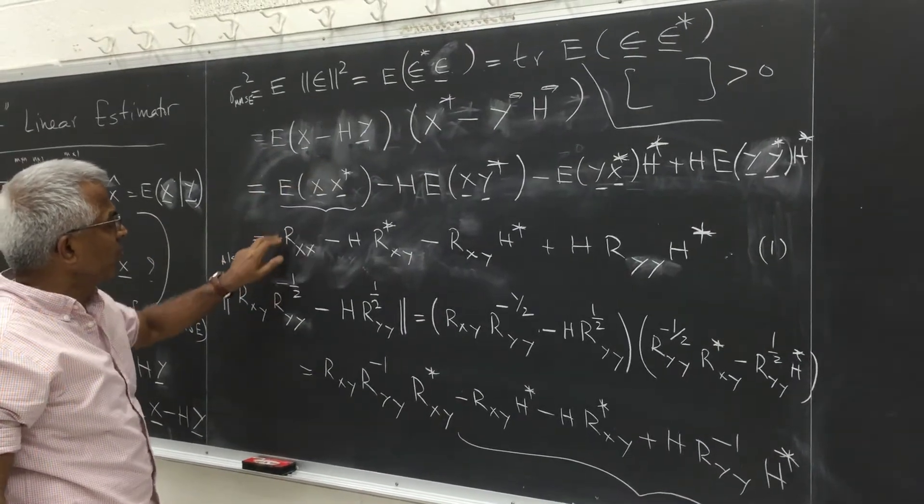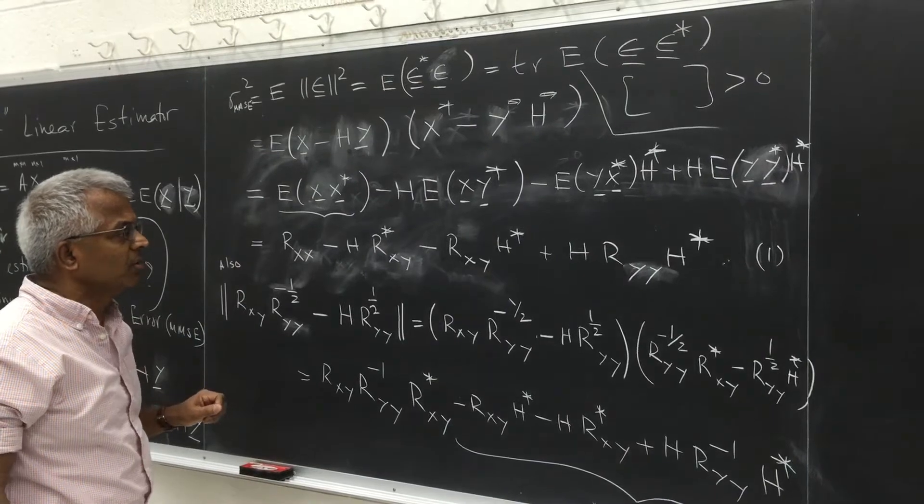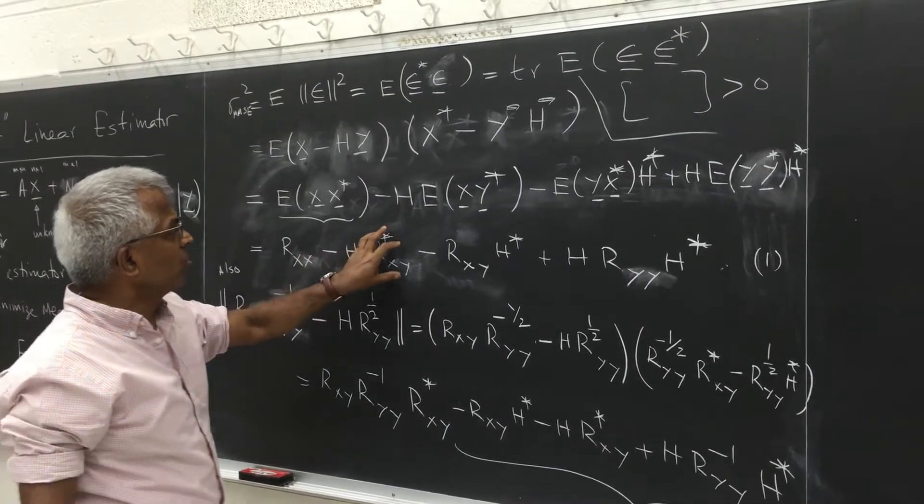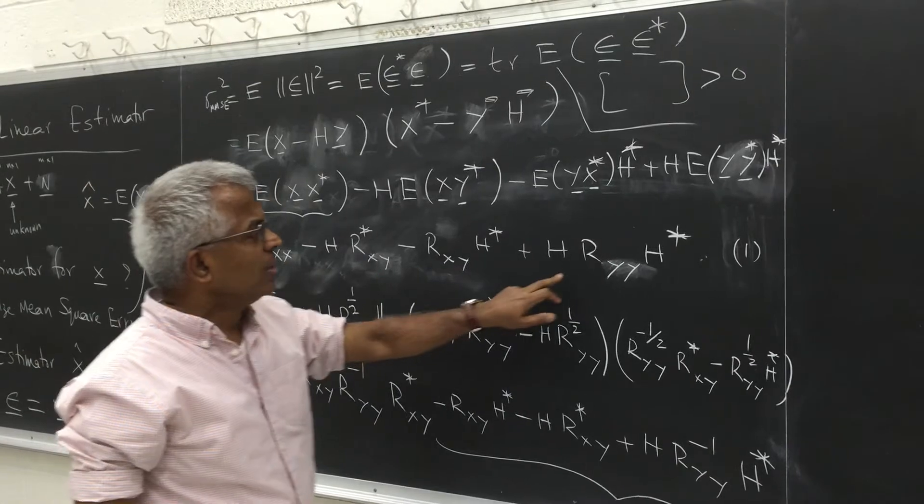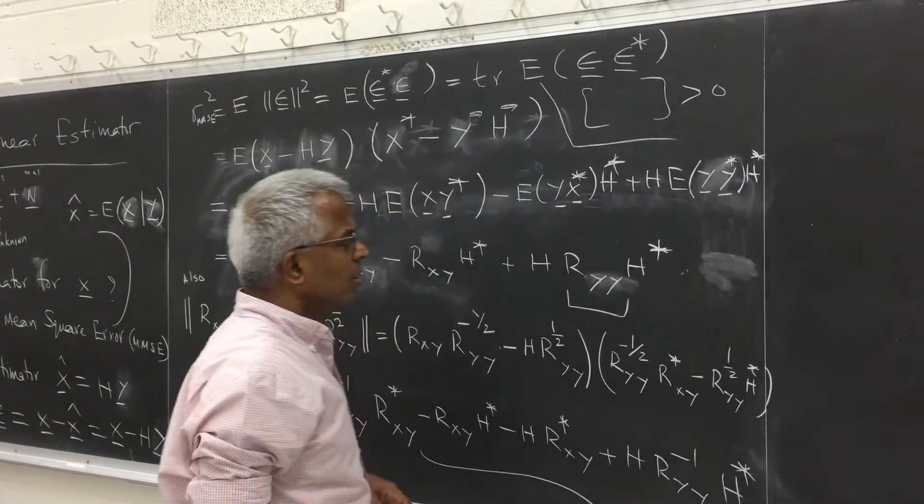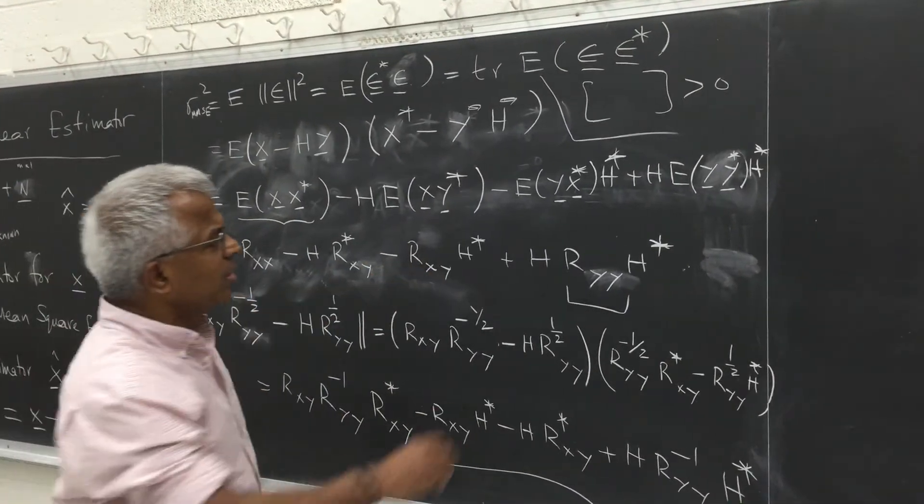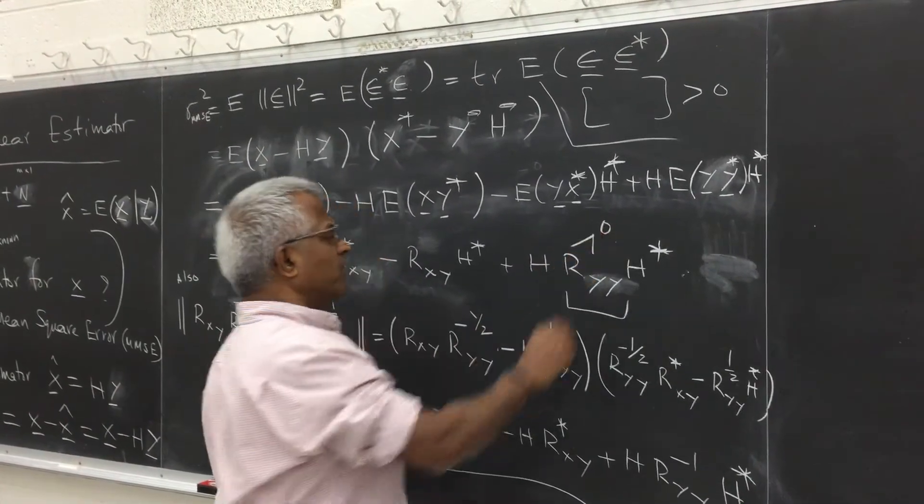This is the expected value of Rxx, the covariance matrix of the signal that we are trying to determine. This is the cross-correlation between unknown and the data. And this is the covariance matrix of the data vector. So assumption is all these are non-negative definite, positive definite matrices.